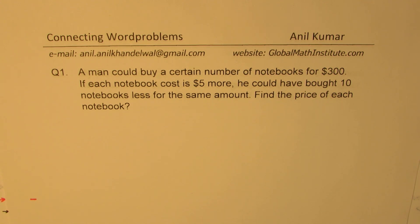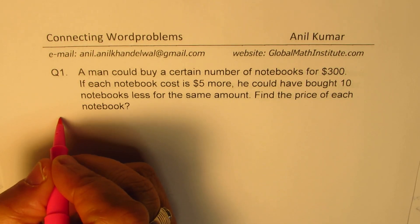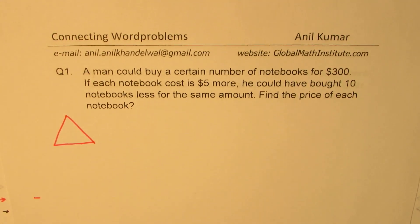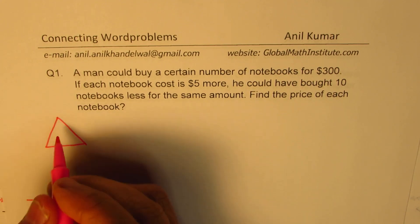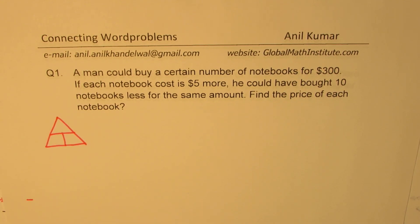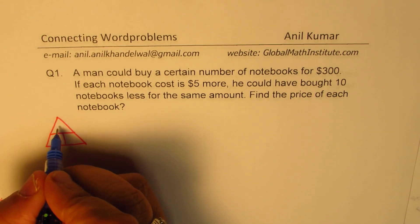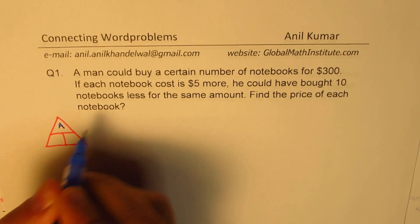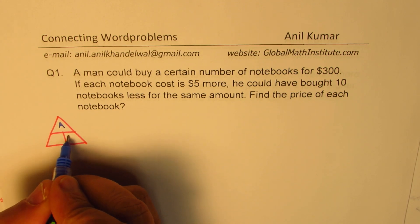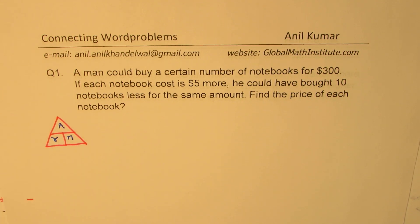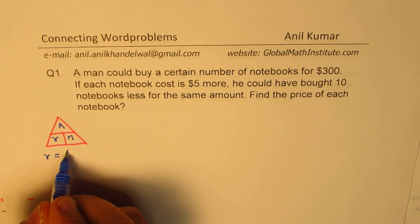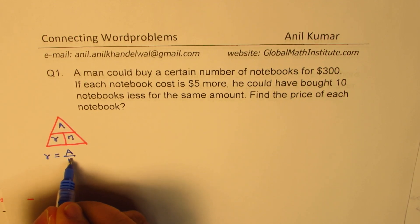Now, there are three things here: the amount, the number of notebooks, and the rate. These quantities can be related as we relate distance, speed and time. If the amount is A — which is $300 for us — and the number is N and the rate is R, then rate is amount over number of items purchased.